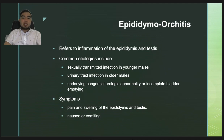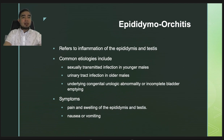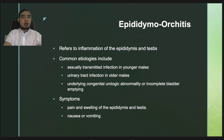The next infection is epididymo-orchitis. Epididymitis refers to inflammation of the epididymis; in most cases the testis is also affected, giving the full name epididymo-orchitis. Common etiologies include sexually transmitted infections, especially in younger males, or urinary tract infection, more common in older males. Other possible etiologies include underlying congenital urologic anomaly or incomplete bladder emptying. Symptoms include pain and swelling of the epididymis and testis, and some men report nausea or vomiting from spermatic cord irritation.